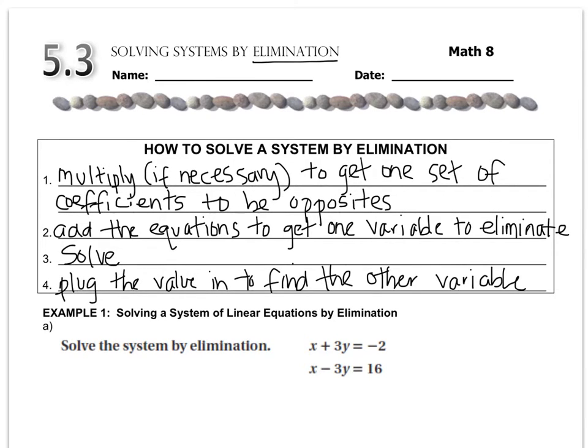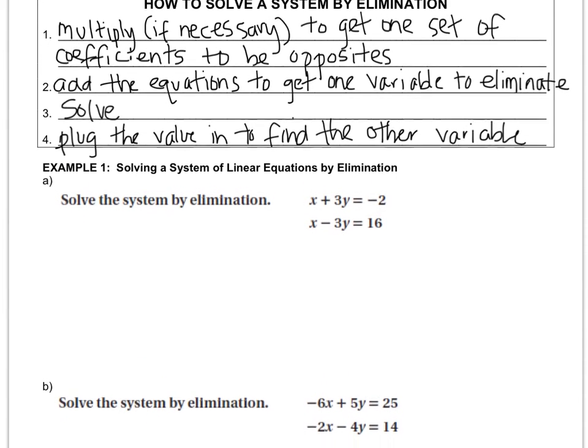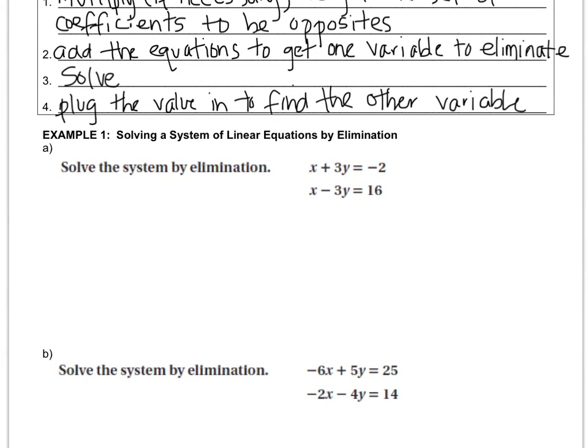All right, so lots of steps, let's see what it means. We look at example A and we have this system right here, and we want to find out the values of x and y. So step one says to multiply if necessary to get one set of coefficients to be opposites, but I actually don't need to do that because if you look at the coefficients of the y, one is positive 3 and the other is negative 3. So step one is already done for me in this example. All I have to do is go straight to step two, which is add.